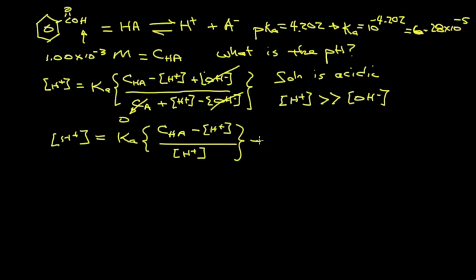If we rearrange that to group terms, we get H-plus squared equals Ka times CHA minus Ka times H-plus. So we have a quadratic equation.